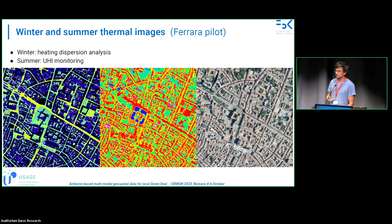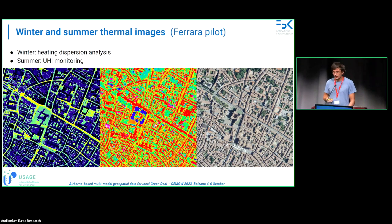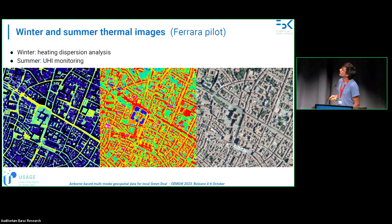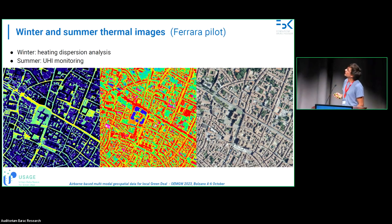Regarding thermal images, the idea of the city is to use them to detect heating dispersion during winter. As I was showing this morning, they are involved in estimation with a bottom-up approach. Here we can see the night acquisition and the daylight acquisition.